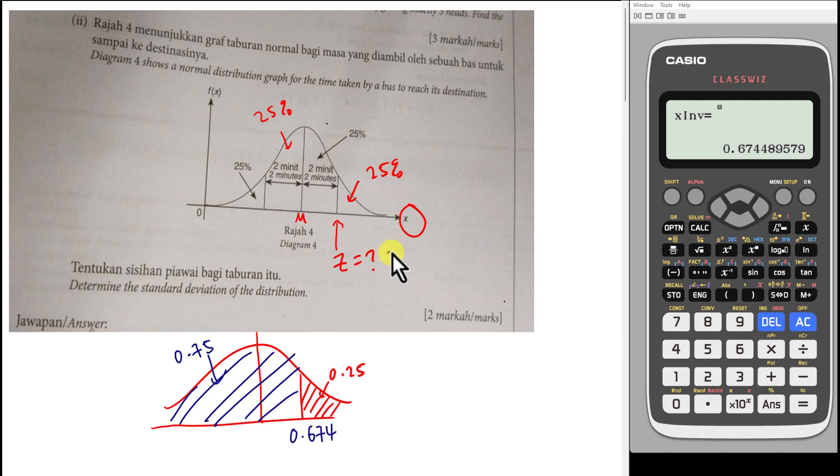Okay, then since this is z, right, we all know about the z formula. So the z formula is x minus mean over standard deviation equals to 0.674. Okay, right now what is the x value?